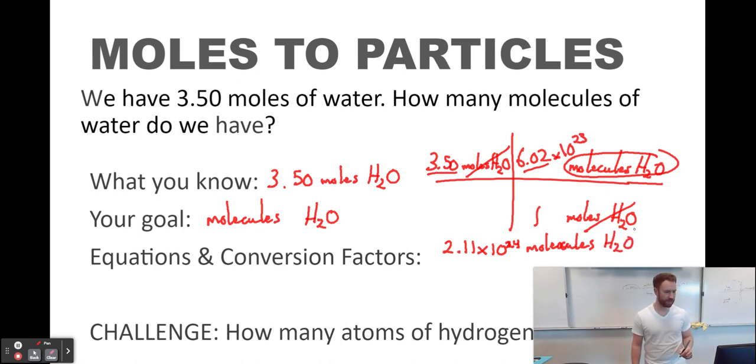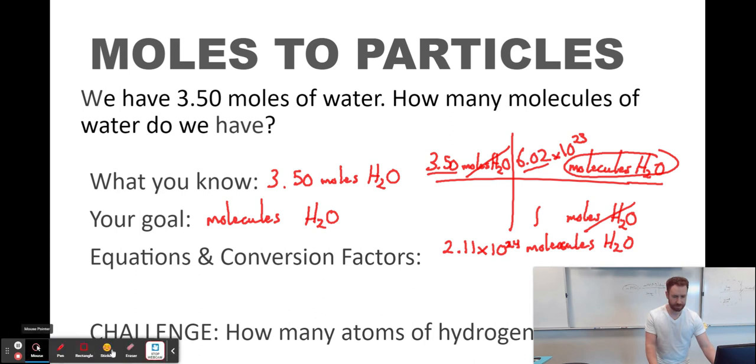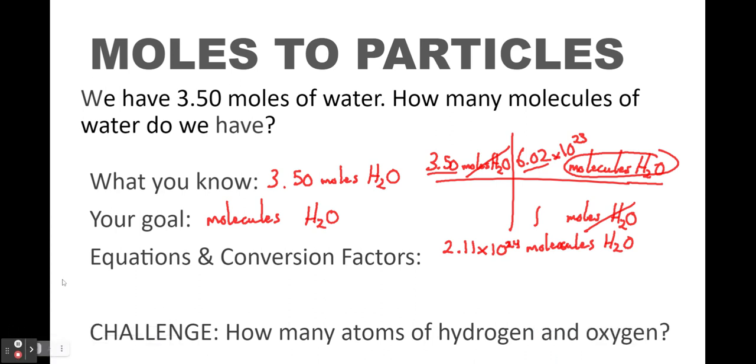Now the challenge problem at the bottom, this is where it gets fun. We have 2.11 times 10 to the 24th molecules of H2O. So the question is, how many atoms of hydrogen and how many atoms of oxygen do we have? Well, if you look at 1 water molecule, there are 2 atoms of hydrogen and 1 atom of oxygen in a single molecule of H2O.